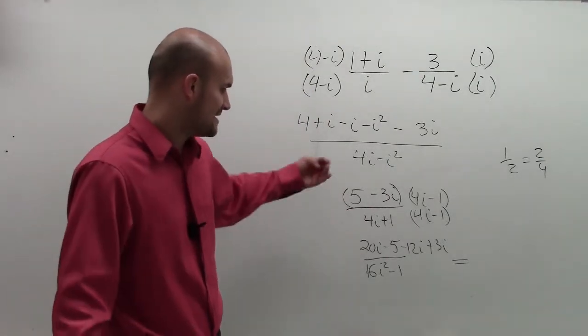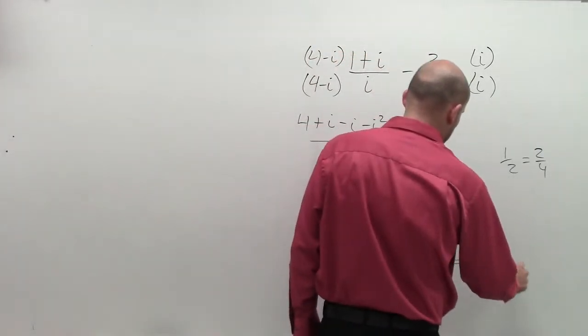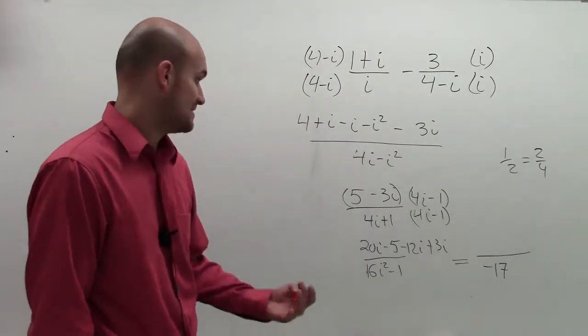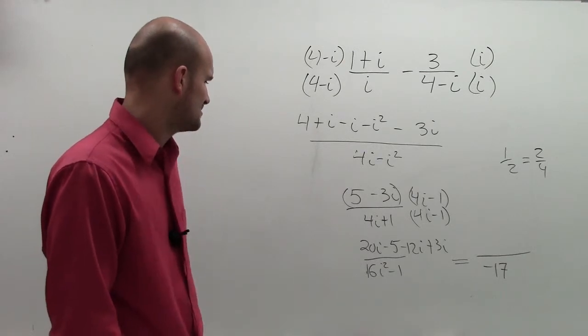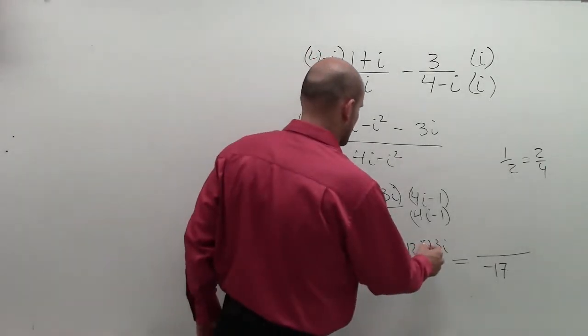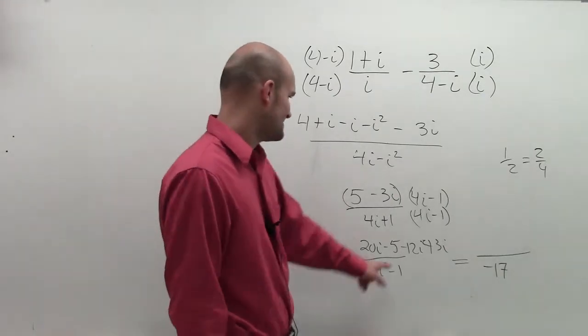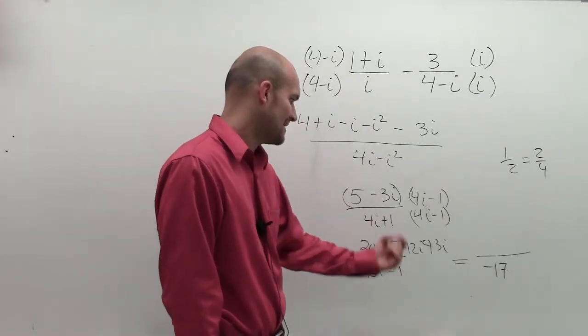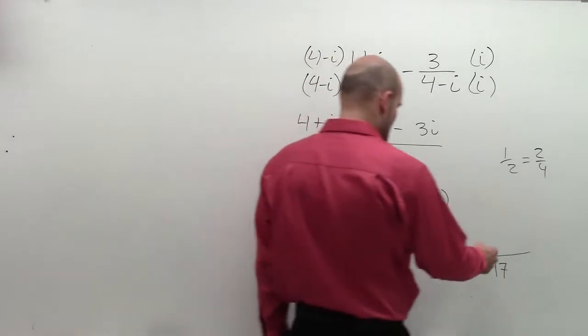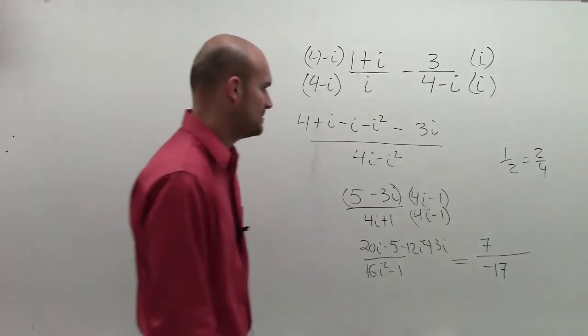So when I simplify my answer even further, i squared is negative 1. 16 times negative 1 is negative 16. Negative 16 minus 1 is negative 17. All over, that's negative 12i squared. So i squared is negative 1. Negative 12 times negative 1 is positive 12. Positive 12 plus negative 5 is actually going to be a positive 7. And then 20i plus 3i would be 23i.